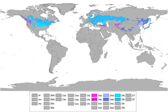Humid continental climates are generally found roughly between latitudes 40°N and 60°N, within the central and northeastern portions of North America, Europe, and Asia. They are much less commonly found in the southern hemisphere due to the larger ocean area at that latitude and the consequent greater maritime moderation.